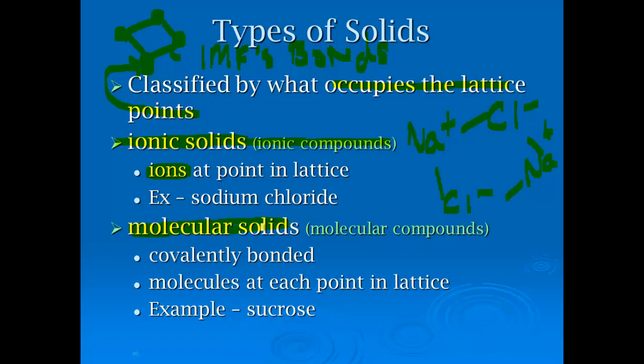Now molecular solids are covalently bonded, regular molecular compounds, and these have molecules at each point in the lattice. This is like water, where what's holding them together here are these IMFs. Sugar would be another example where you'd have sugar molecules at each point in the lattice.